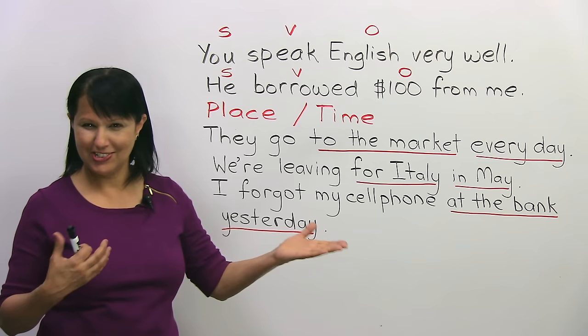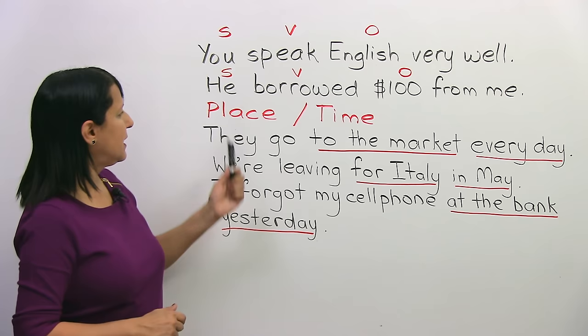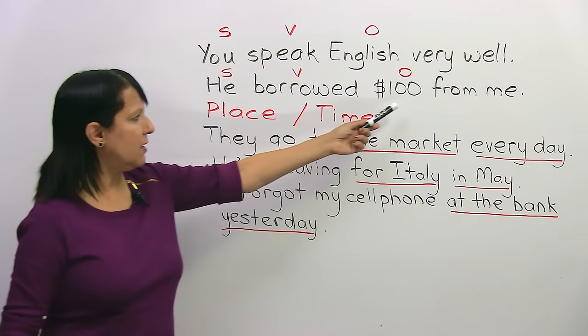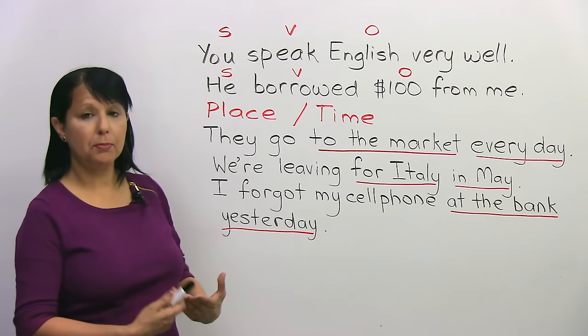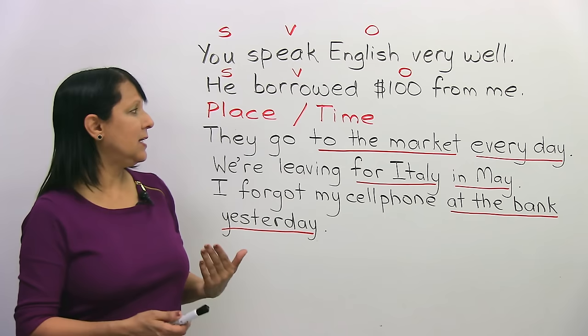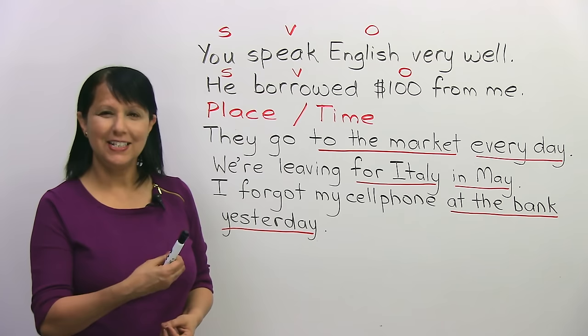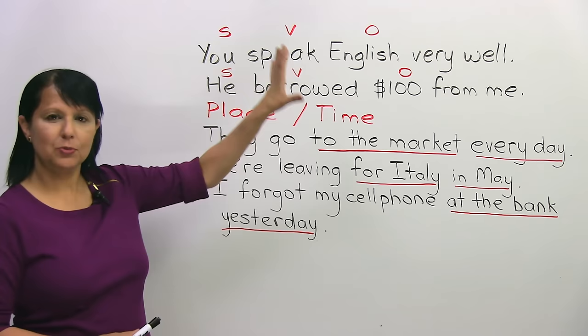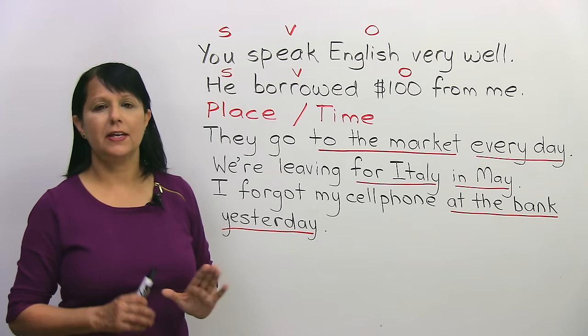Let's look at another example of that basic order: 'He borrowed a hundred dollars from me.' He is the subject, borrowed is the verb, borrowed what? A hundred dollars. And then any other information: from me. So we do not say 'He borrowed from me a hundred dollars.' We say 'He borrowed a hundred dollars from me.' That's the review of basic subject-verb order that English sentences follow.